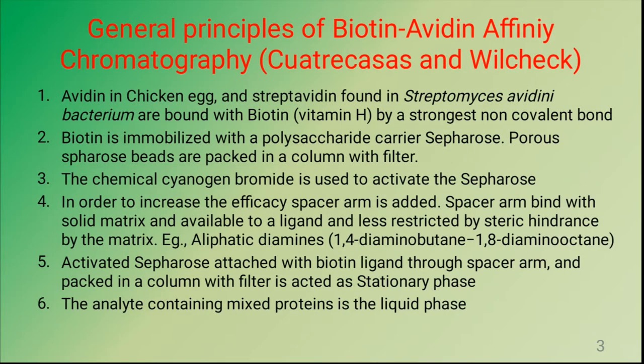Now we will see the basic principles of affinity chromatography initially demonstrated by Cuatrecasas and Wilczek. They used biotin-avidin specific chromatography. In this, avidin is a protein present in the chicken egg, and another similar protein called streptavidin is present in Streptomyces avidinii bacterium. Both have the tendency to bind with biotin, that is vitamin H, by the strongest non-covalent bond.